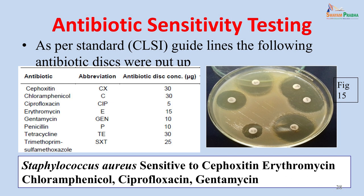Once the organism was identified, antibiotic sensitivity was done as per the standards provided by the Clinical Laboratory Standards Institute (CLSI). The following antibiotic discs were used: cefoxitin, chloramphenicol, ciprofloxacin, erythromycin, gentamicin, penicillin, tetracycline, and trimethoprim-sulfamethoxazole. The isolate was sensitive to cefoxitin, erythromycin, chloramphenicol, ciprofloxacin and gentamicin. Sensitivity is noted by measuring the diameter of the inhibition zone around the disc and comparing with CLSI standards to label the isolate as sensitive, resistant or intermediate.